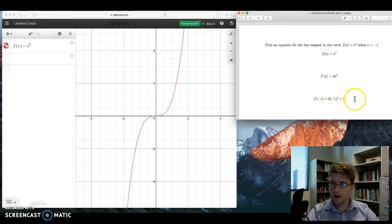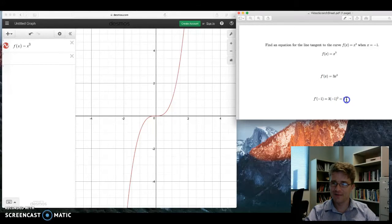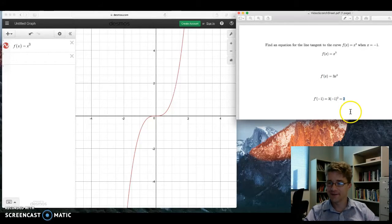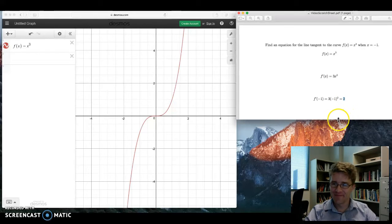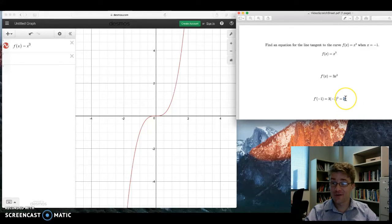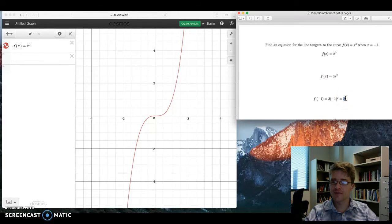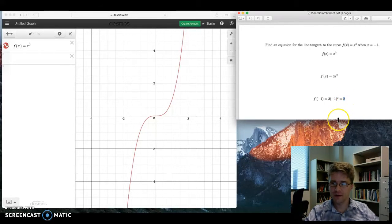Which gives us 2. Why do I have 2 there? I have no idea. That should say 3. That should say 3. Pretend that that's a 3. I don't know why that's a 2. So the derivative at negative 1 is 3. That gives us the slope of our tangent line when x is negative 1.